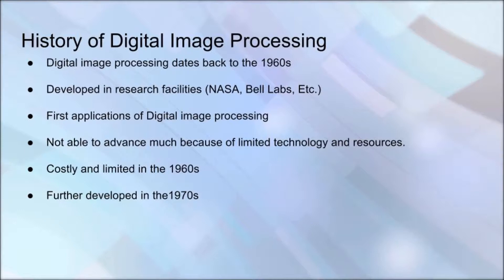Digital image processing dates back to the 1960s, in which the first techniques were developed at the NASA Jet Propulsion Laboratory, the Massachusetts Institute of Technology, Bell Labs, University of Maryland, and other research facilities. Its first applications included uses in satellite imaging, wire photo conversions, medical imaging, video phone applications, character recognition, and photograph enhancement. Although image processing was developed over five decades ago, it was not able to advance much because of limited technology and resources at the time. The downsides of image processing during the 1960s was that it was costly to use and very limited with the technology available.